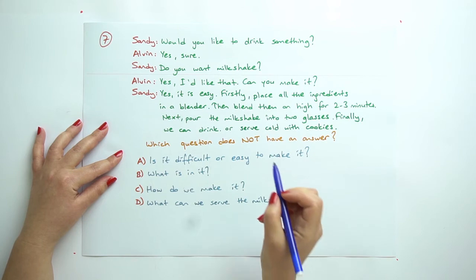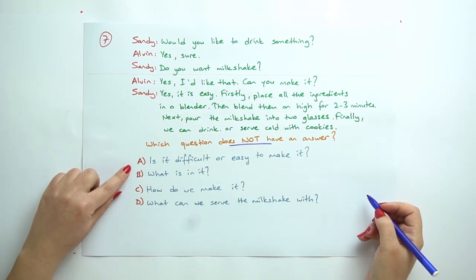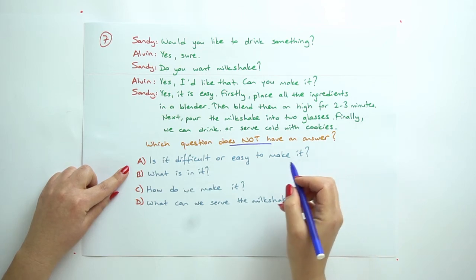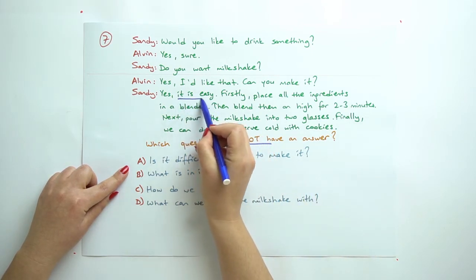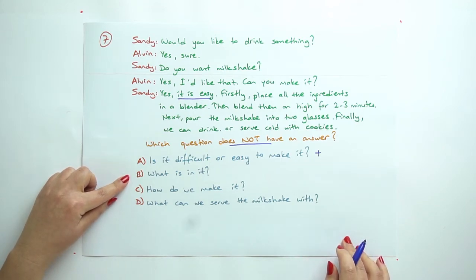So we are going to find does not have an answer. Yes, A: is it difficult or easy to make? So it is easy. Here it says it is easy, so we have. What is in it? Do we have this one?